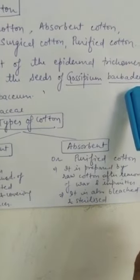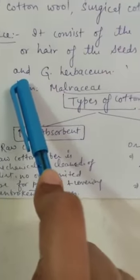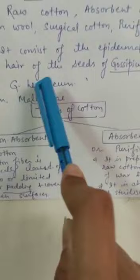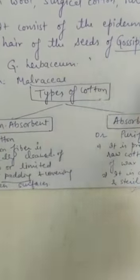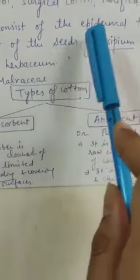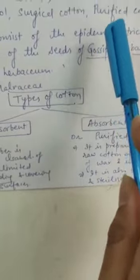barbadense or Gossypium herbaceum. Any species can be used but the genus is the same: Gossypium. Family: Malvaceae.